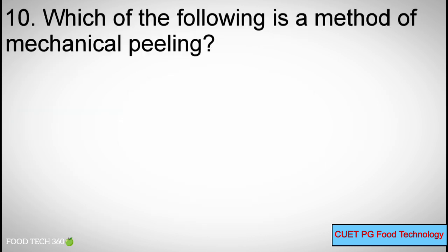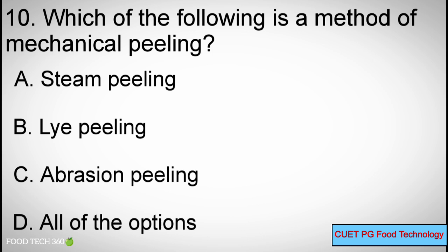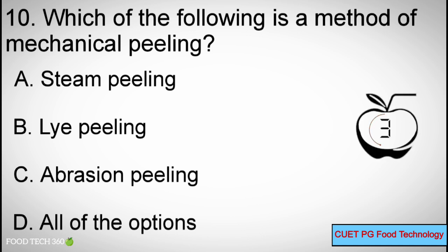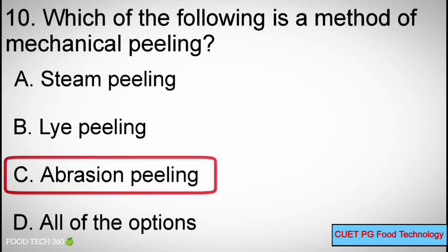Q10: Which of the following is a method of mechanical peeling? A. Steam peeling, B. Light peeling, C. Abrasion peeling, D. All of the options. Correct answer: C. Abrasion peeling.